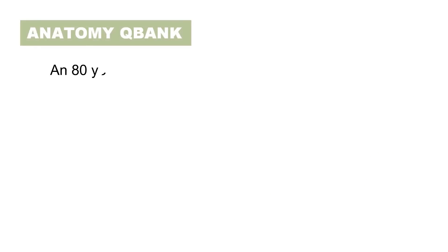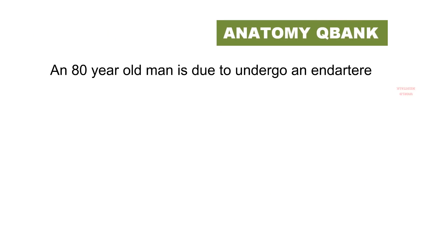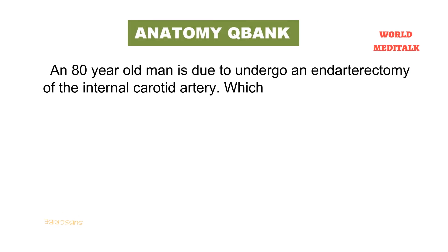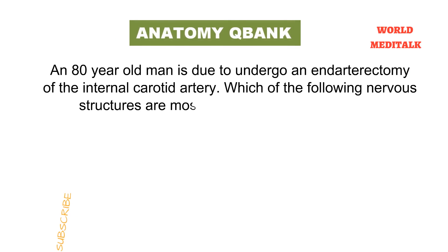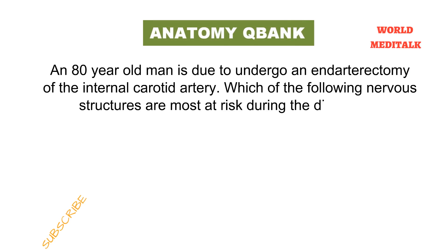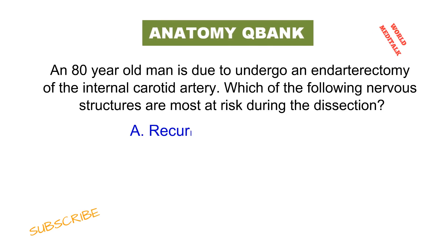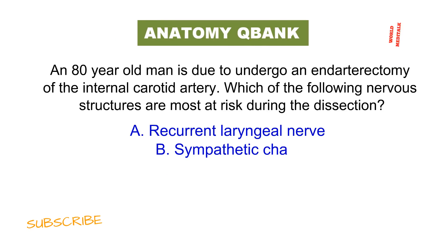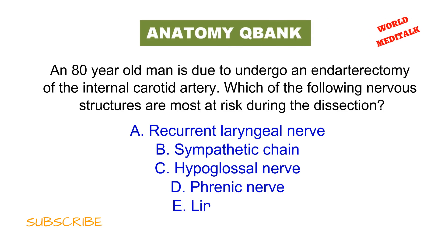An 80-year-old man is due to undergo an endarterectomy of the internal carotid artery. Which of the following nervous structures are most at risk during the dissection? Recurrent laryngeal nerve, sympathetic chain, hypoglossal nerve, phrenic nerve, lingual nerve.